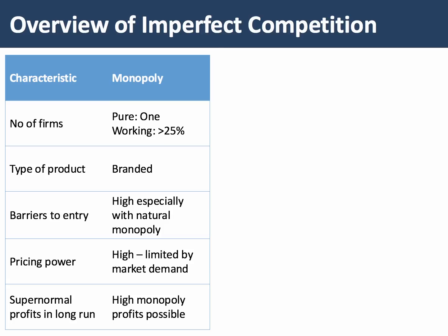In a monopoly, the number of firms will depend on definition. In a pure monopoly there's one, but a working monopoly is any firm with more than 25% of the market, and a dominant monopoly is any firm with more than 40%. Products tend to be branded, often patented, and there are assumed to be significant barriers to entry, especially structural entry barriers associated with a natural monopoly. Monopolies have high pricing power, but that's limited by both the level of demand and the elasticity of demand. A monopoly can choose the price or the output, but not both. And we expect a monopoly to see supernormal returns — price greater than average cost — in the long run, because of barriers to entry.